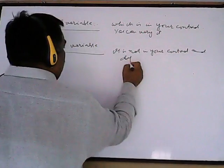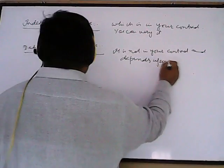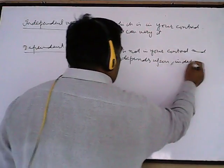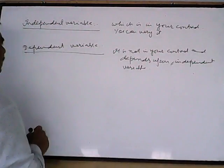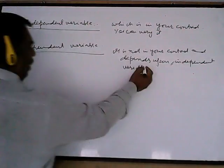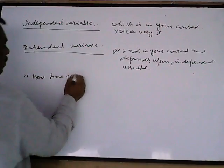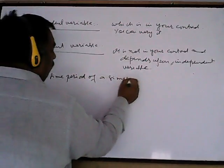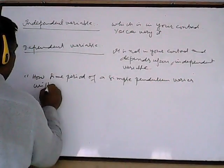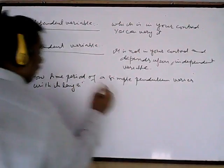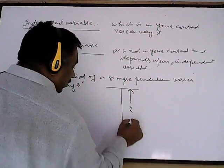The dependent variable depends upon the independent variable. For example, suppose it is said you have to investigate how the time period of a simple pendulum varies with its length. The length of the pendulum is measured from the point of suspension up to the center of the bob — this is the length of the pendulum.